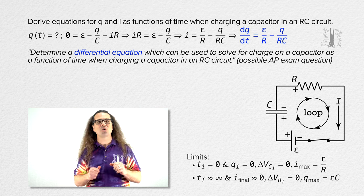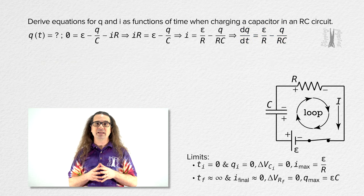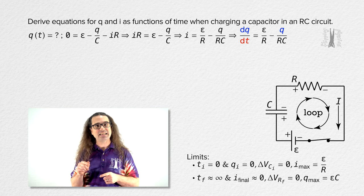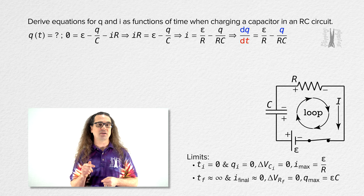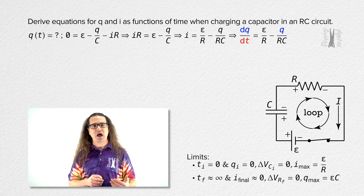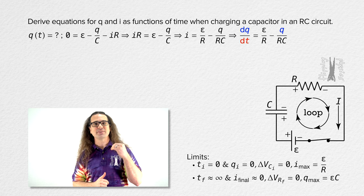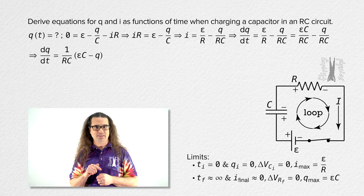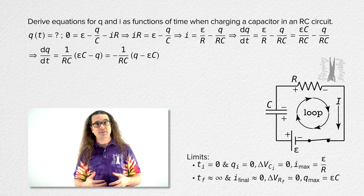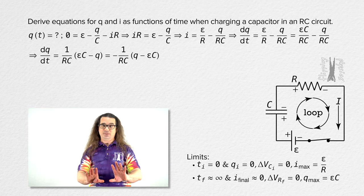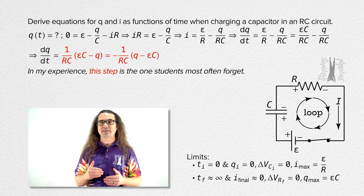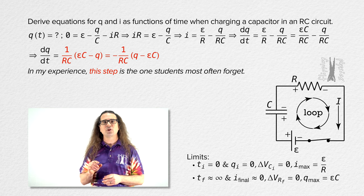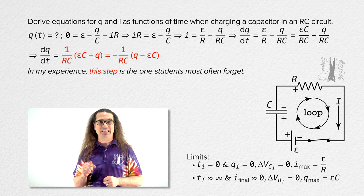Our goal is to get dq and q on the left-hand side of the equation and dt on the right-hand side so we can integrate. We get a common denominator of resistance times capacitance on the right-hand side. We factor out the inverse of resistance times capacitance, and then factor out negative one from the parenthetical expression on the right-hand side. This step — factoring out negative one — is the one step students most often forget, so please remember it at this point in the derivation.